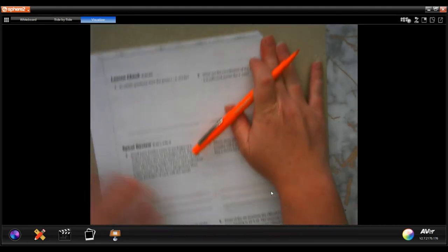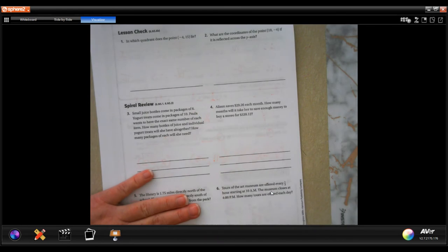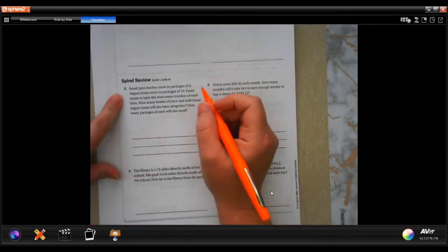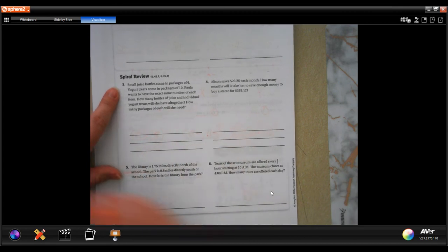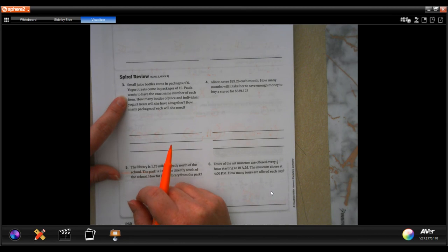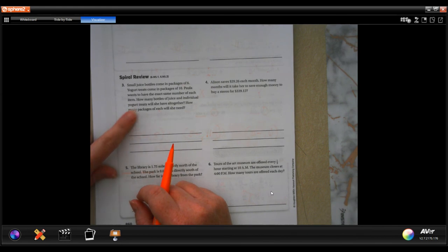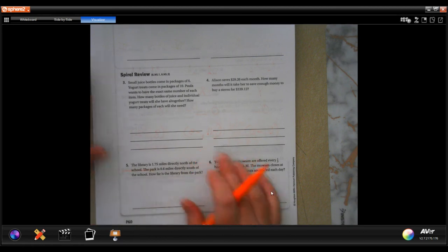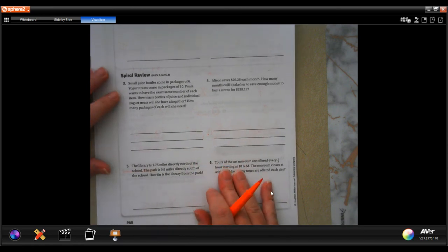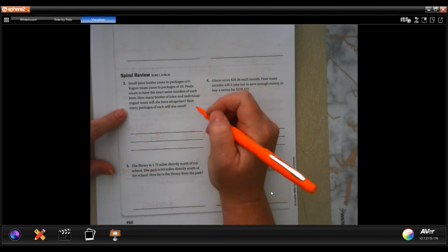All right guys, we're going to flip it over. You guys are going to do one and two on the back on the lesson check, and we are going to go to our review. Number three says small juice bottles come in packages of six, yogurt treats come in packages of ten. Ali wants to have the exact same number of each item. How many bottles of juice and individual yogurt treats will she have all together? How many packages of each will she need?